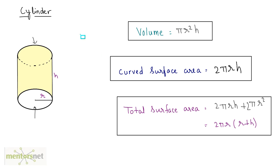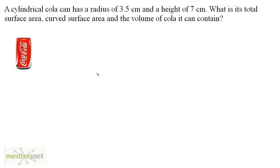Keep these formulas in mind. Let's solve a problem now. A cylindrical cola can has a radius of 3.5 centimeters and a height of 7 centimeters. What is the total surface area, curved surface area, and the volume of cola it can contain? We have been given r = 3.5 cm and h = 7 cm. Put these values in the formulas and get the answers.